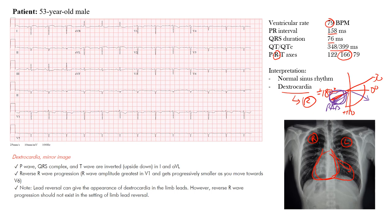In dextrocardia, the P wave, QRS complex, and T wave are inverted — upside down — in leads I and aVL. Normally those leads show upright P waves, QRS complexes, and T waves, but here they're all negative. In AVR, we'd normally expect negative P waves, but here they're upright and the QRS is also upright — you're seeing almost the opposite changes, which helps confirm sinus rhythm.